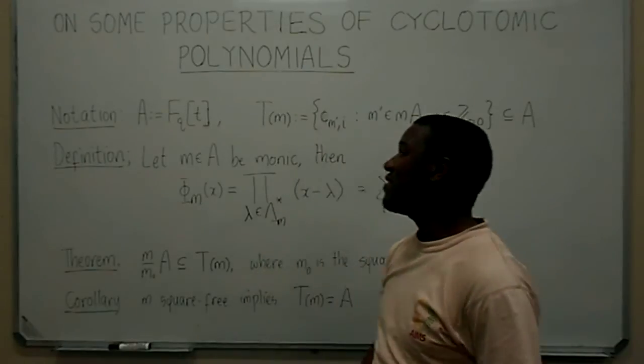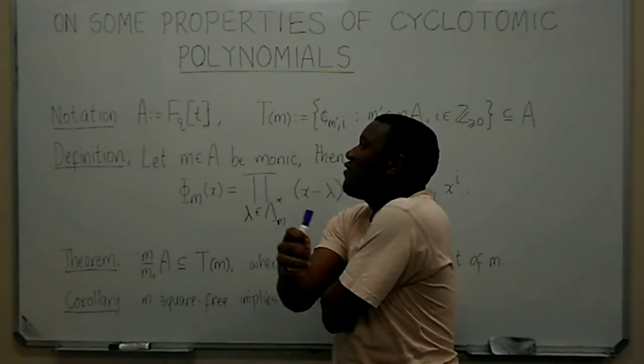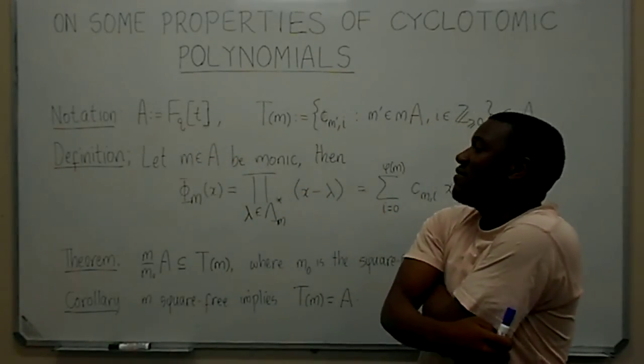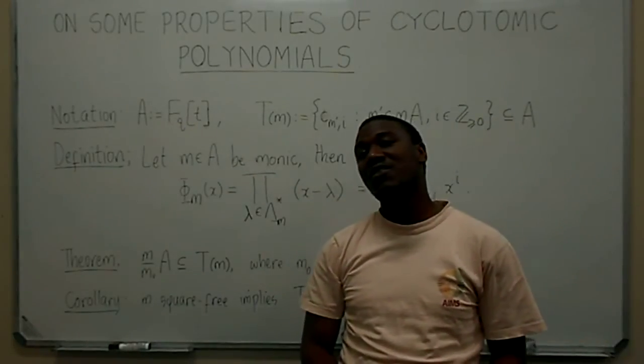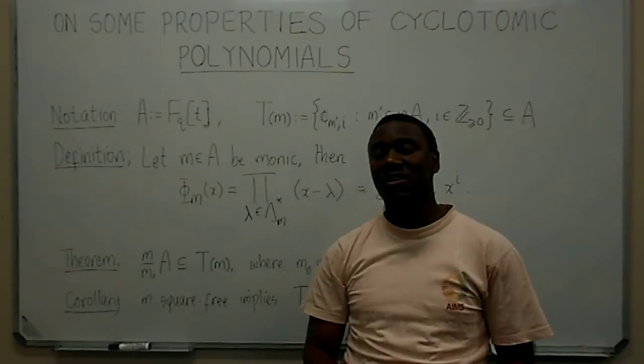Now, in this paper, we replace Z with A, which is the ring of polynomials in the variable T, defined over a finite field FQ, and the cyclotomic polynomials are replaced by the Culley cyclotomic polynomials.